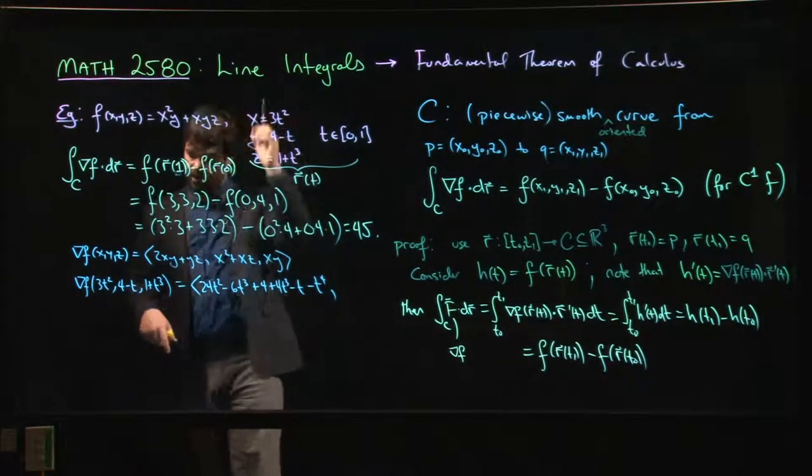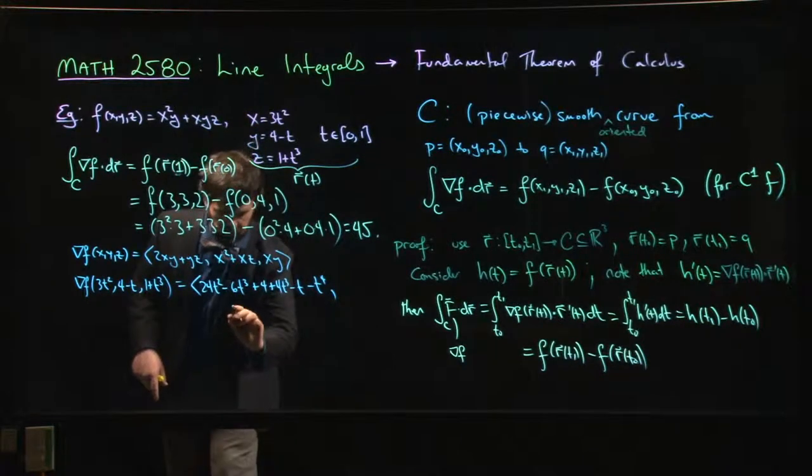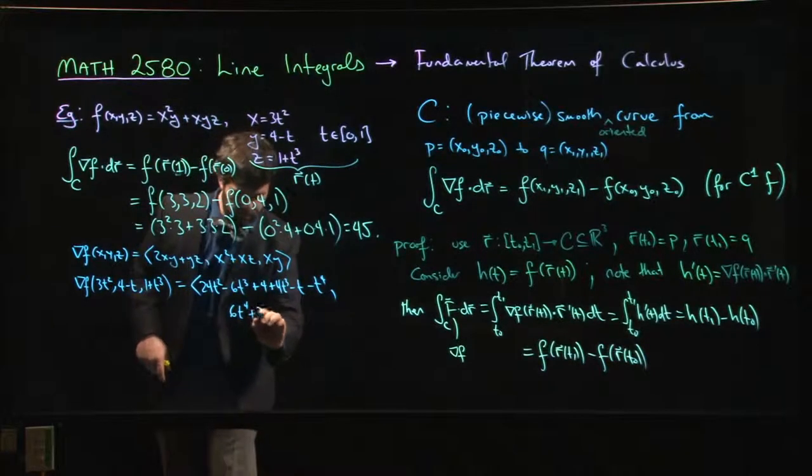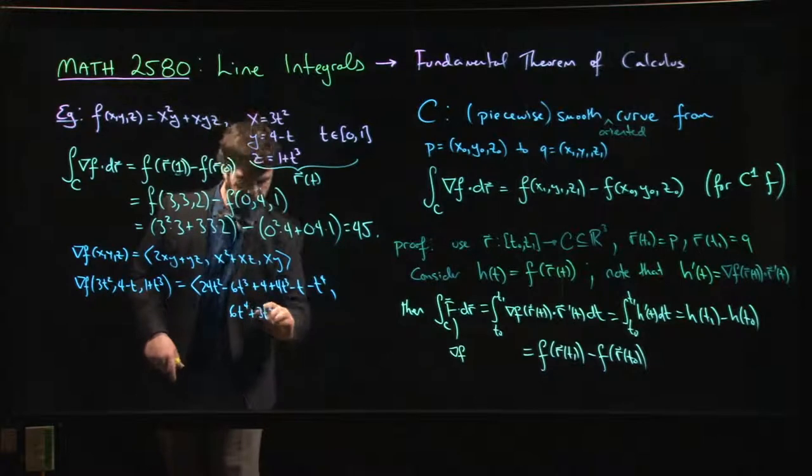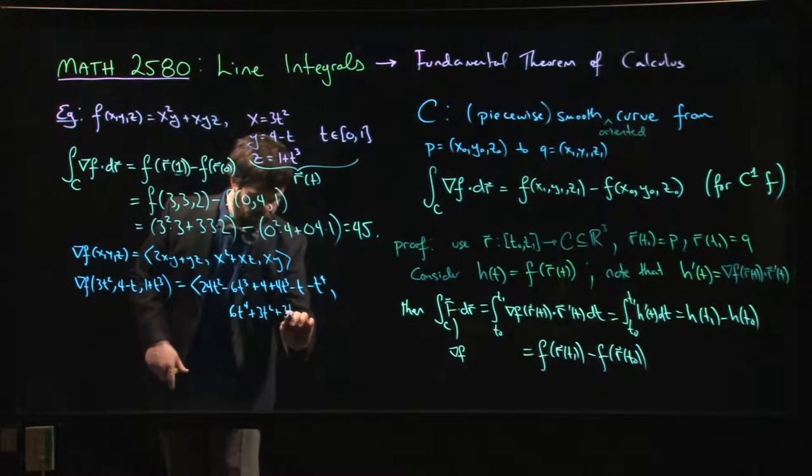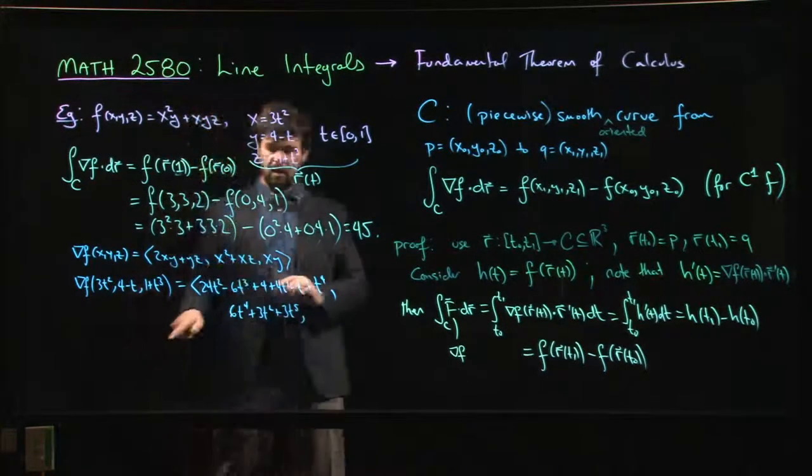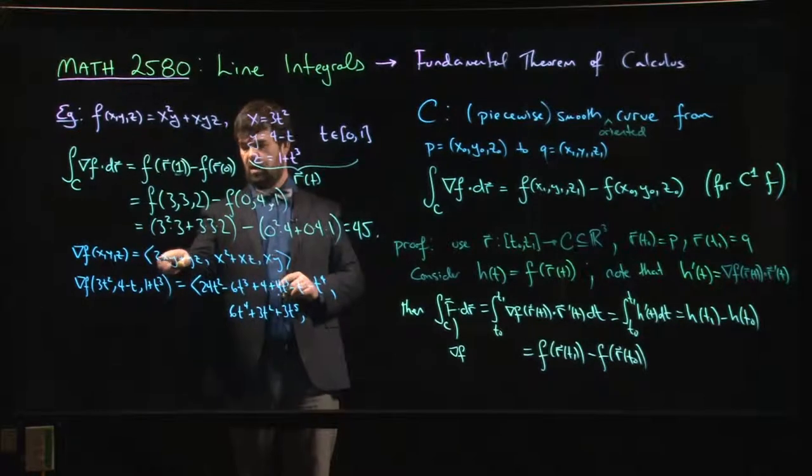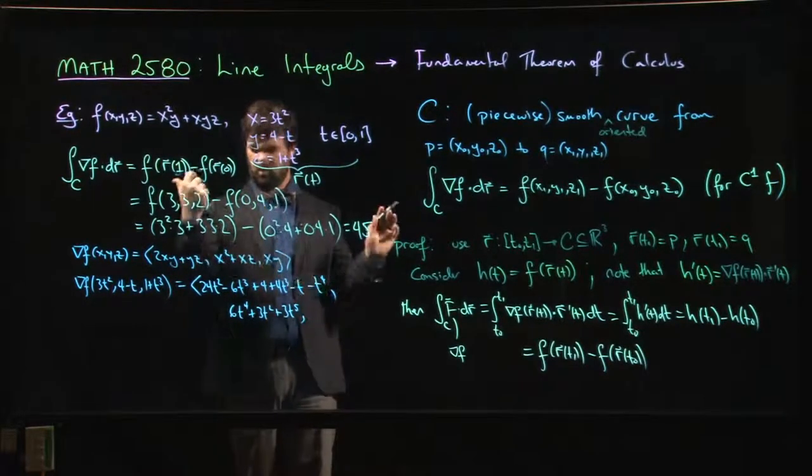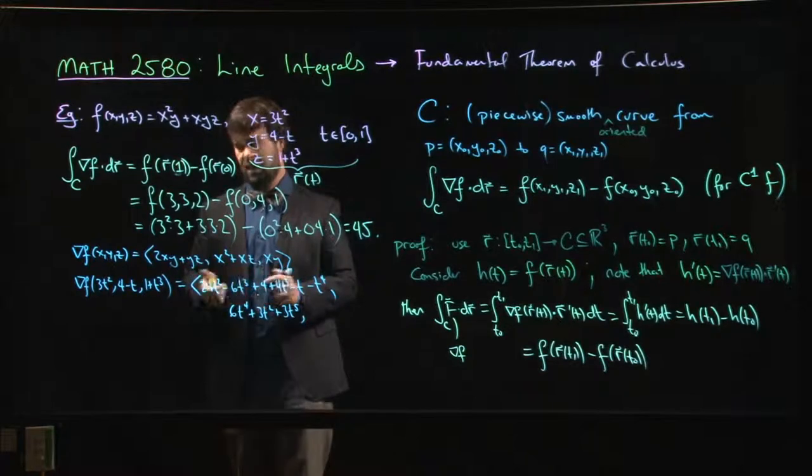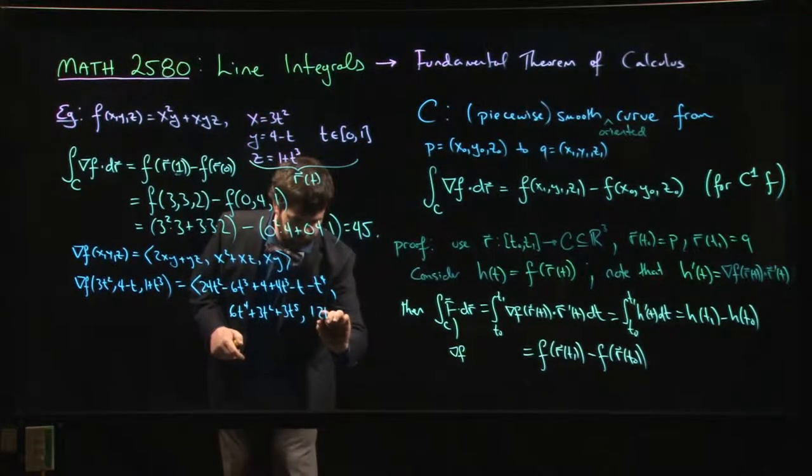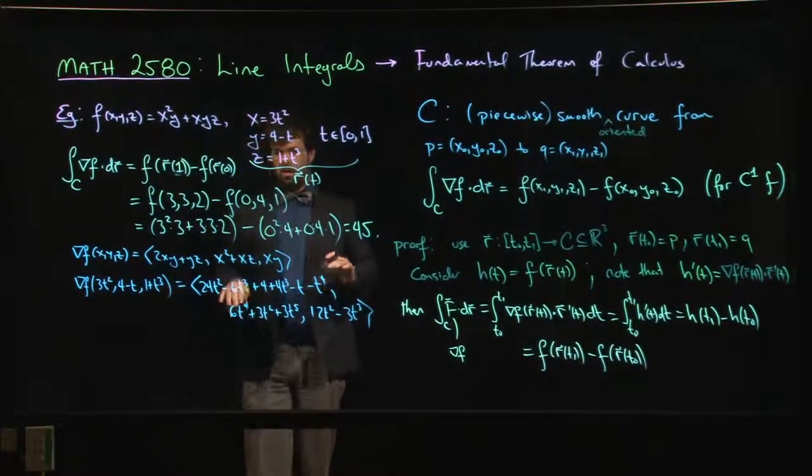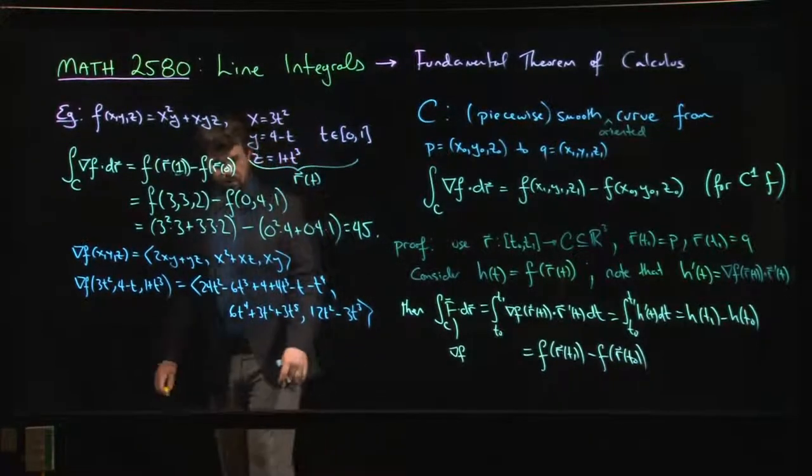Now I got to do the y component. x squared, 9t to the 4, x times z is going to be 3t squared plus 3t to the fifth. And then finally we can do x times y here, and we're going to have, oh actually we've done twice x times y, so now we'll just do xy, that's okay, we can have that, 12t squared minus 3t cubed. Oh well that's really awful, but you can clean that up a little bit.